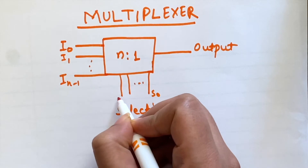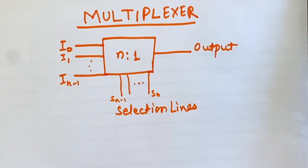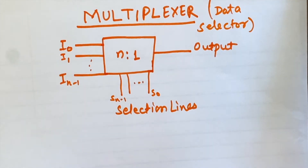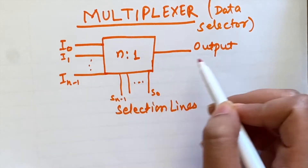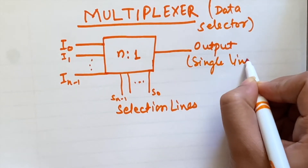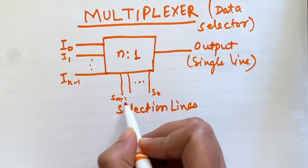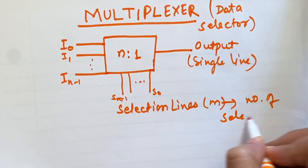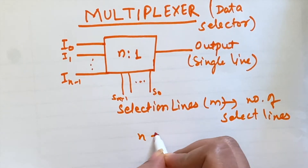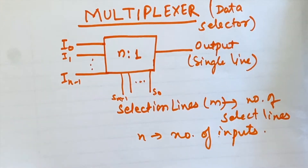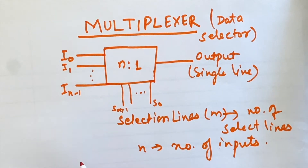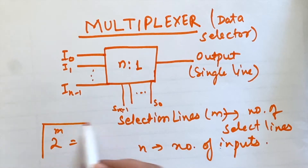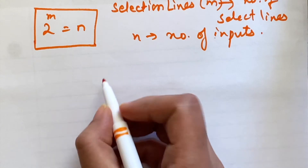The select lines are labeled S0 through S(m-1). A multiplexer is also called a data selector, since it selects one of the inputs and forwards it to the single output line. Here n is the number of inputs and m is the number of select lines. To find the number of select lines for a multiplexer we have the relation: 2 to the power m equals n. We will see this clearly with the following example of a 2-to-1 multiplexer.